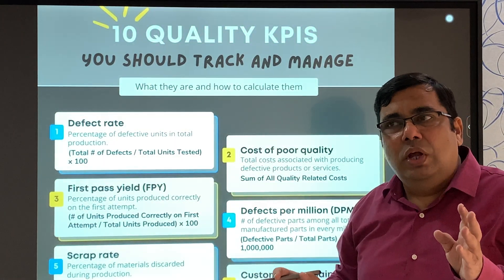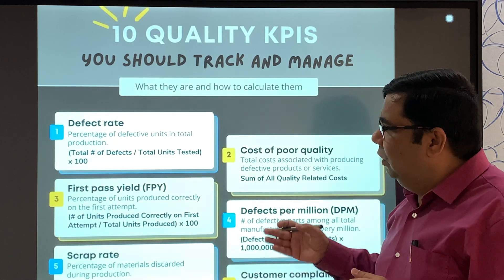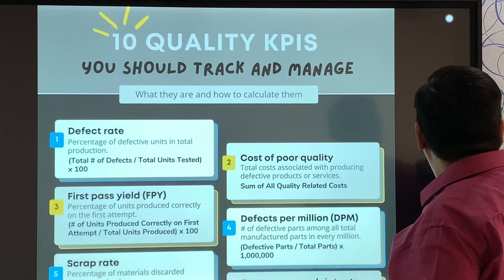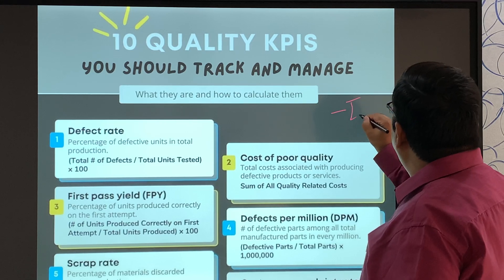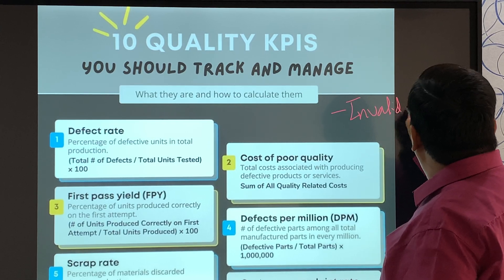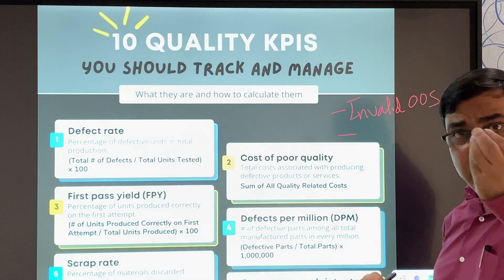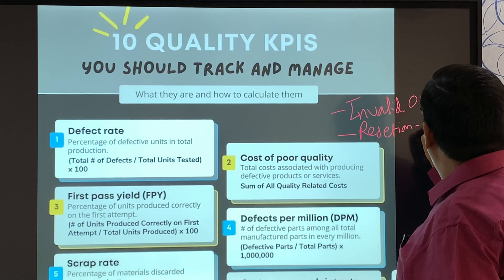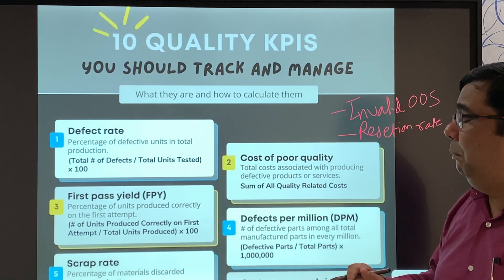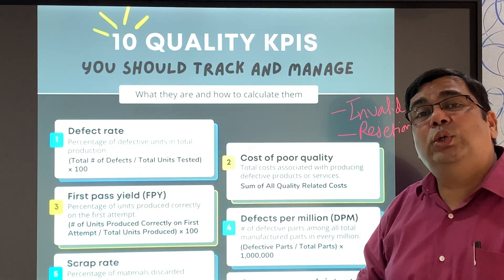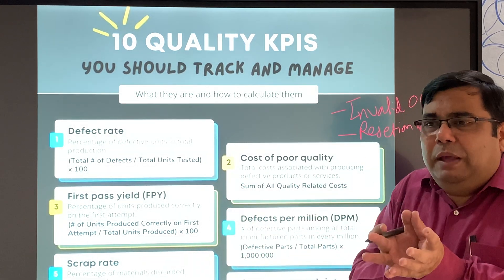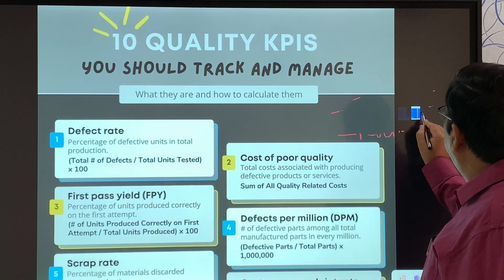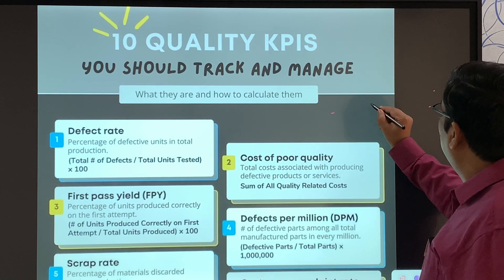Hope you understand the 10 KPIs. There are some additional KPIs you can also consider, such as out-of-specification (OOS) results and rejection rate. However, my point is that KPIs should not be 50 or 100 — keep them limited and smart. The objective of the KPIs should be a SMART objective so that they are measurable. You can see that everything discussed here is measurable based on data values.